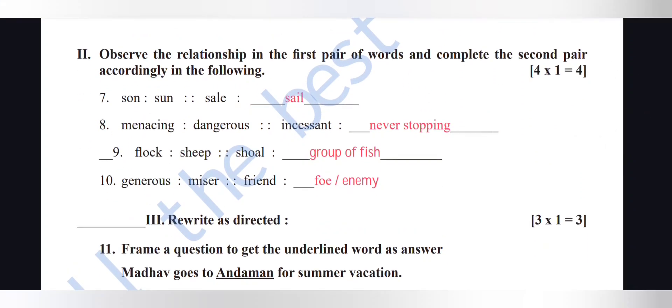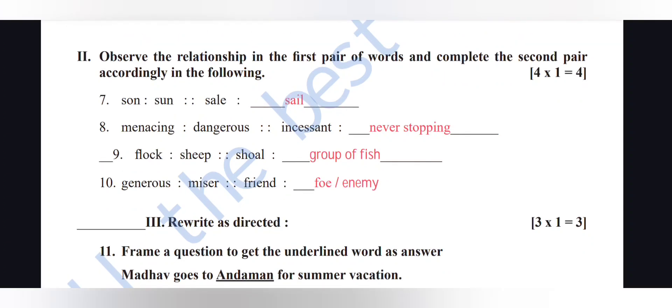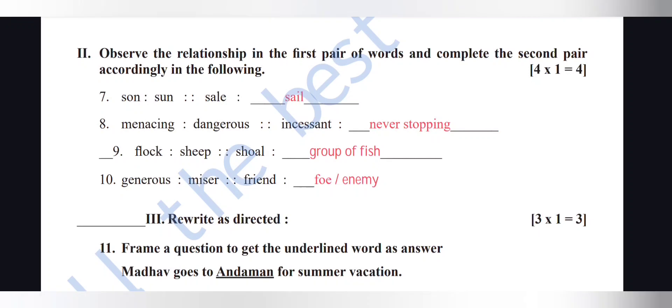Second main section has four questions for one mark each. Observe the relationship in the first pair and complete the second: 'son/sun' — they sound the same, so they are homophones. Similarly, 'sale' — the answer is 'sail' (S-A-I-L). 'Menacing' means dangerous; 'incessant' means never stopping.